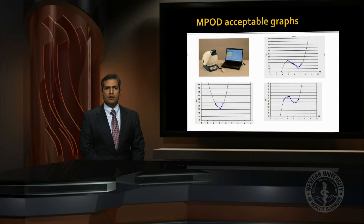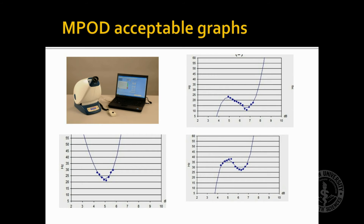Here is a picture of the heterochromatic flicker photometer that we utilized, and the graphs that it produces. We can see in these graphs that each graph has a smooth downward trend, a lowest point, and three uptick marks. These were the criteria utilized to evaluate the quality of the graph.